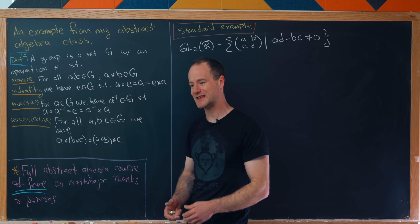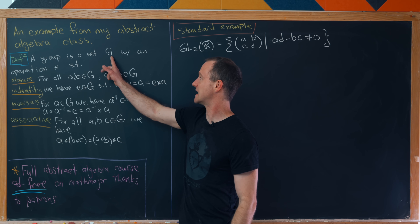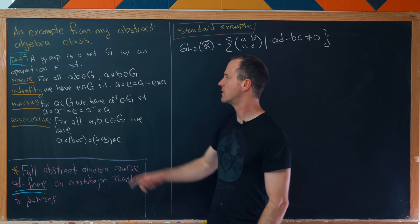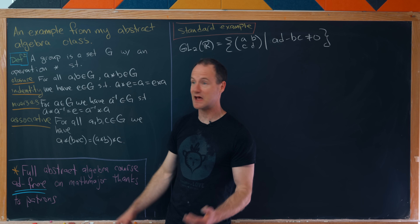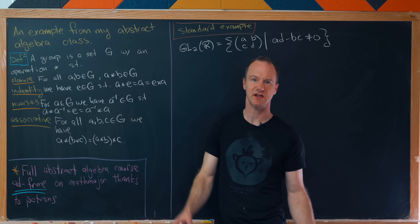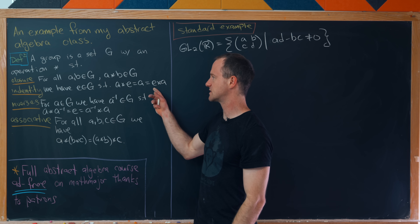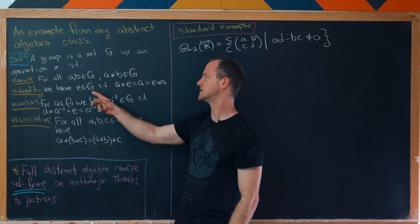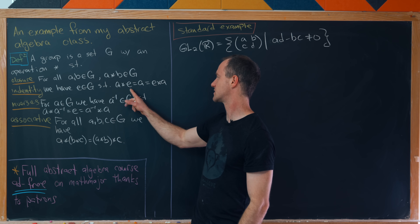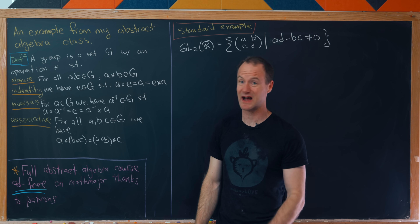So let's quickly recall the definition of a group and look at a very standard example. A group is a set G together with an operation star satisfying four axioms. The first axiom is called closure: if you have any A and B in G, then A star B is an element of G — you can combine two elements from the group and you do not get outside of the group. The second is called the identity axiom: there's a special element E such that combining it with any element on either side changes nothing. Think about adding by zero or multiplying by one.